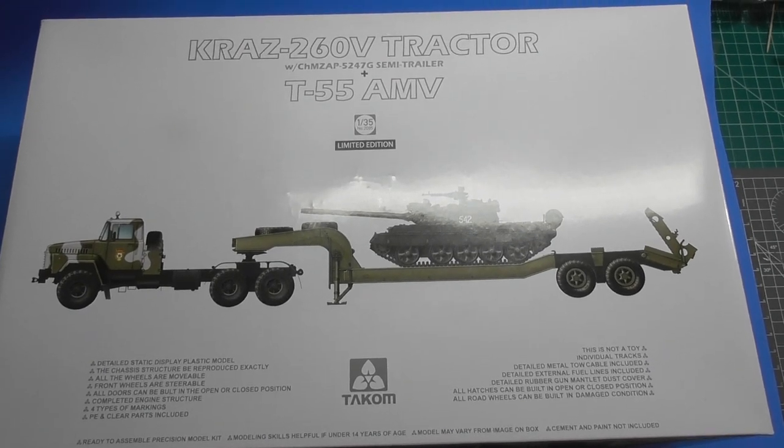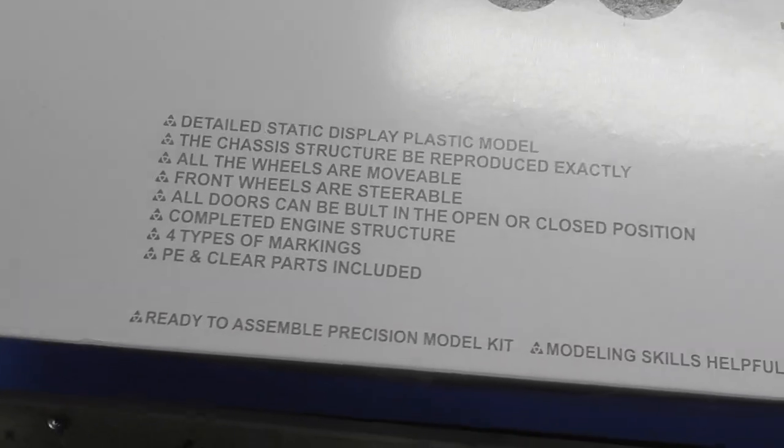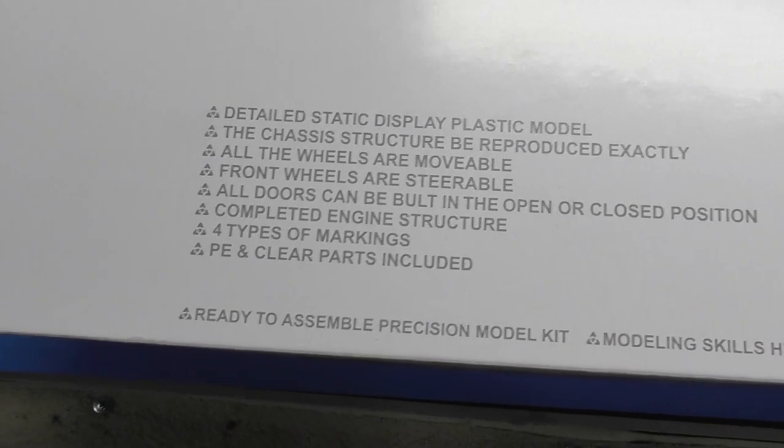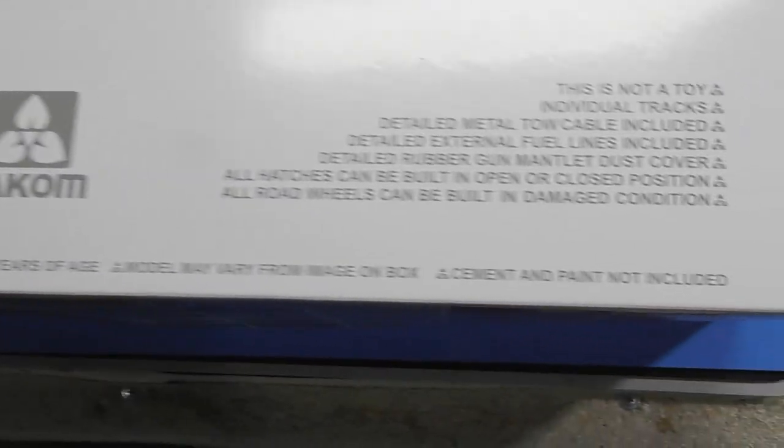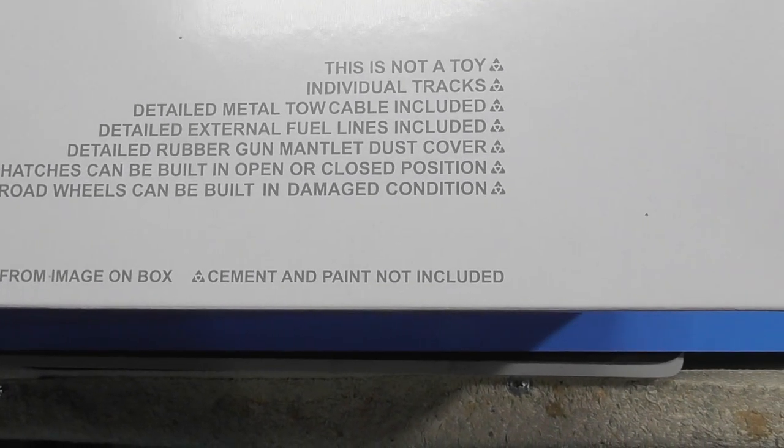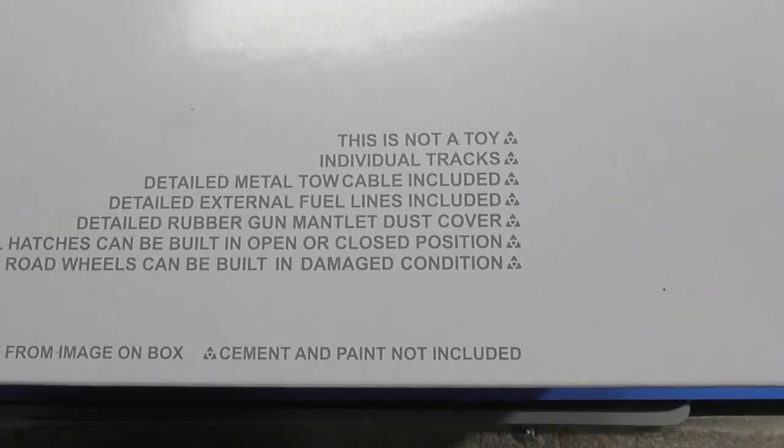Big box. Kraz Trailer T-55 Tank. You can see some of the things the box says on it. This is for the truck and the tank. Warnings, detailed metal tow cable, detailed external fuel lines.